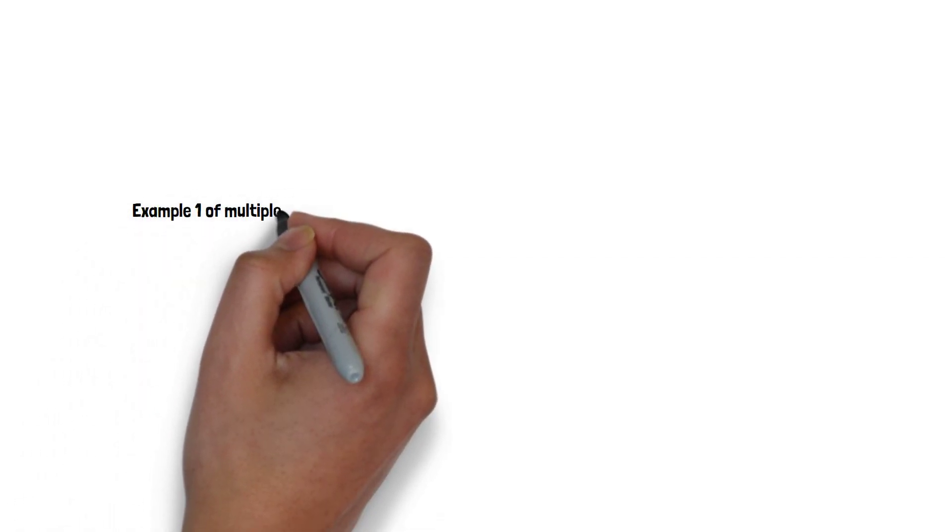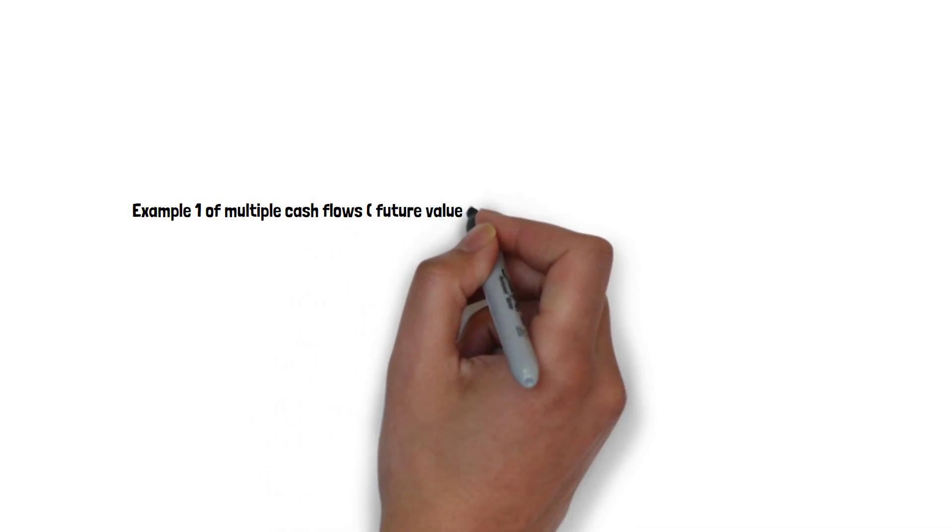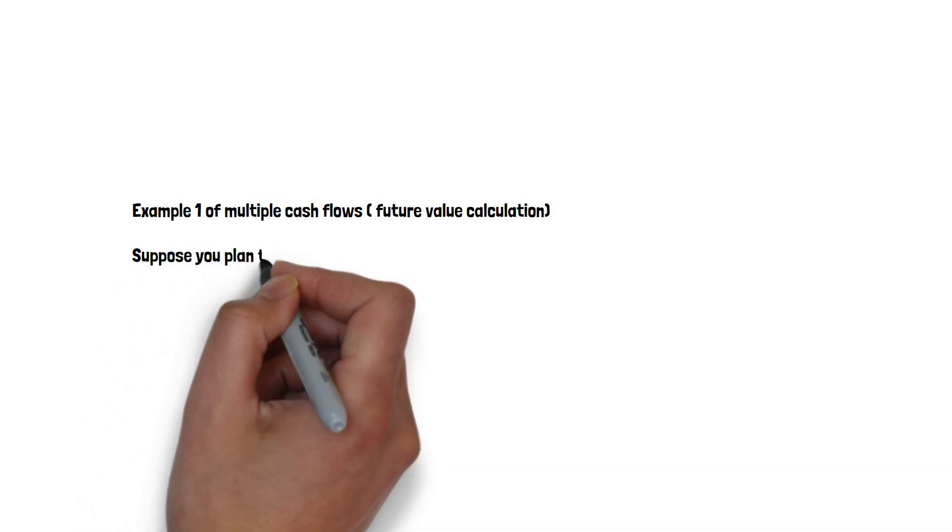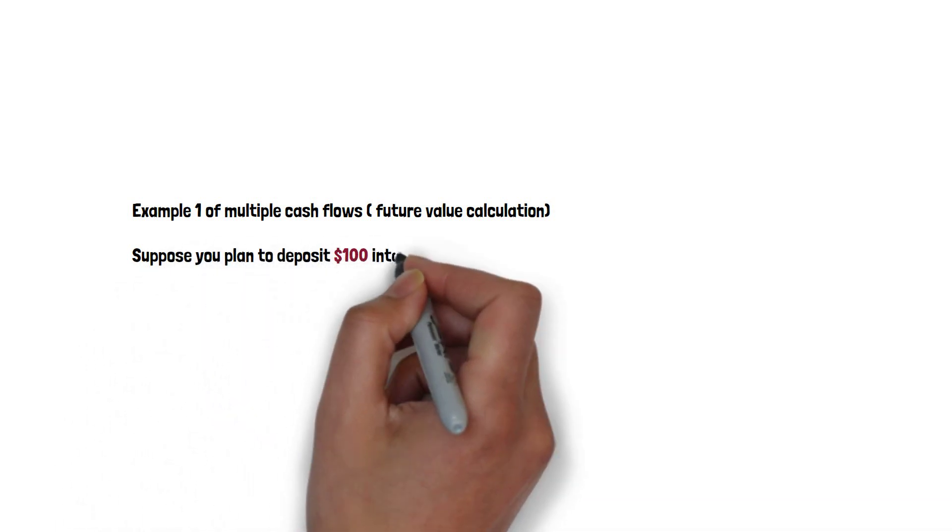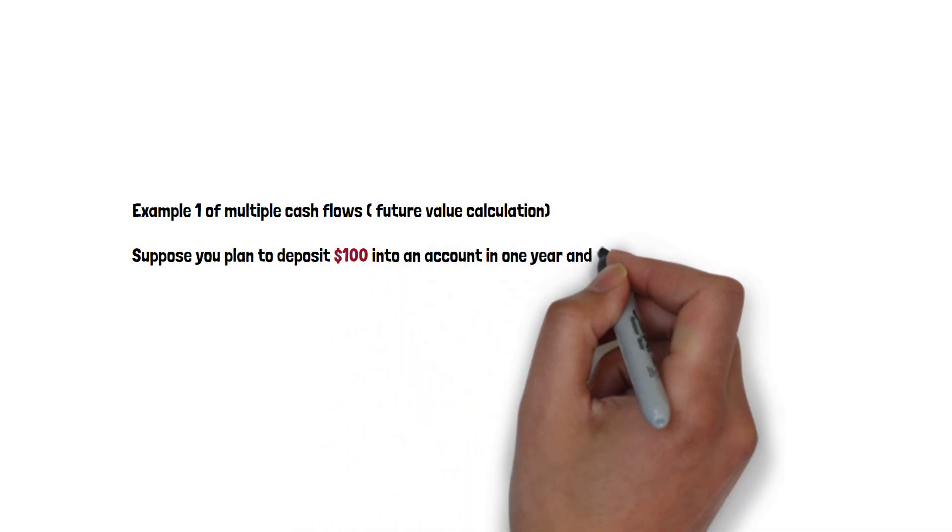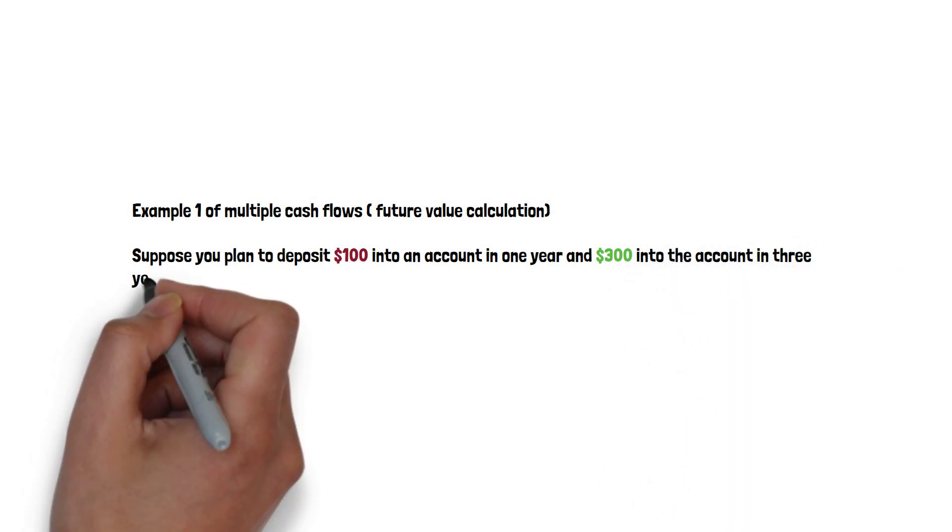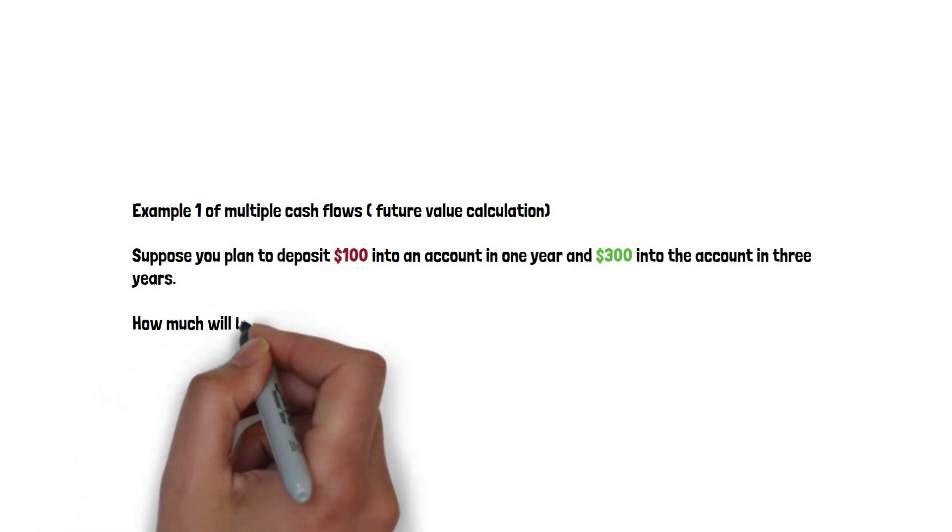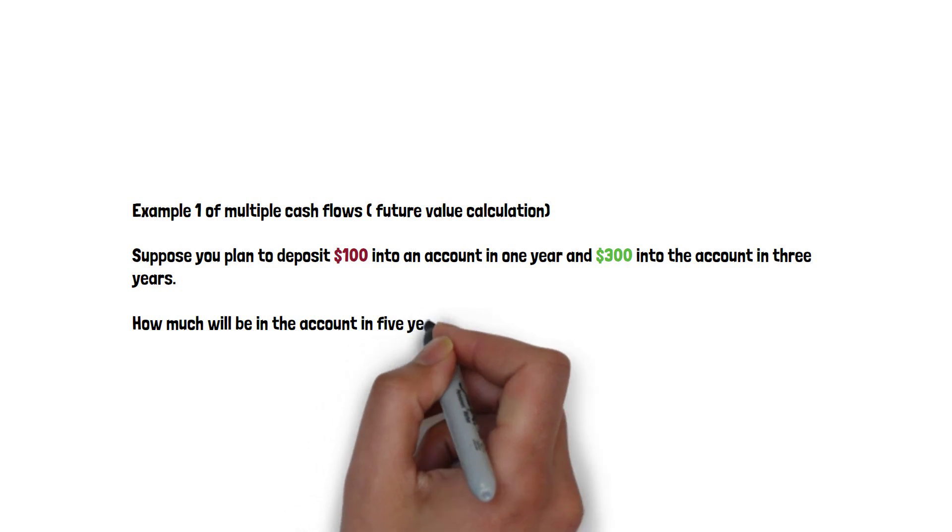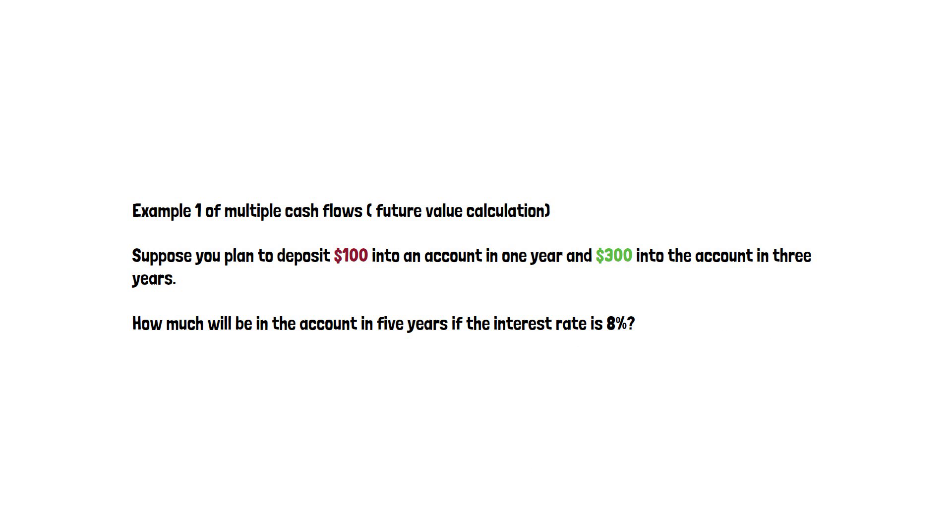I'm going to give examples of multiple cash flows. In example one, it's about future value calculation. Let's suppose you plan to deposit $100 into a bank account in year one, and then you deposit $300 into the same account in three years. The question is how much will be in the bank account in five years, if we assume the interest rate is 8%.